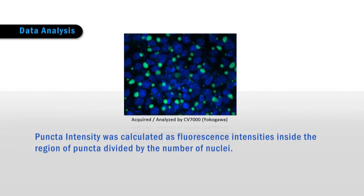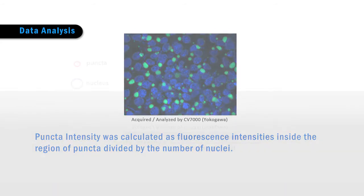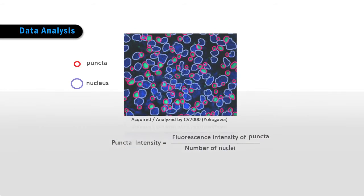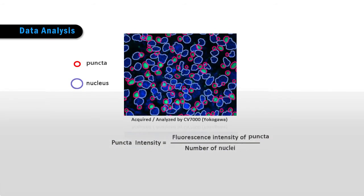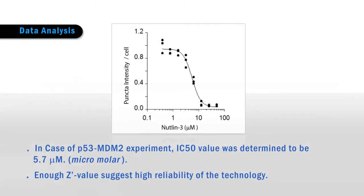Puncta intensity was calculated as fluorescence intensities inside the region of puncta divided by the number of nuclei. In the case of the P53 and MDM2 experiment, the IC-50 value was determined to be 5.7 micromoles. A sufficient Z-prime value suggests high reliability of the technology.